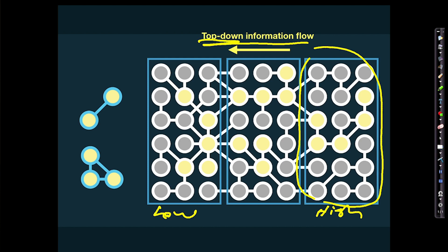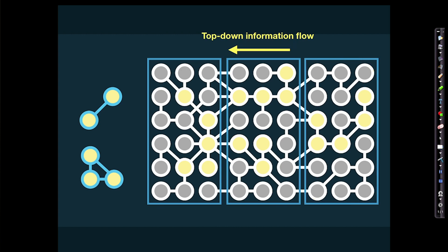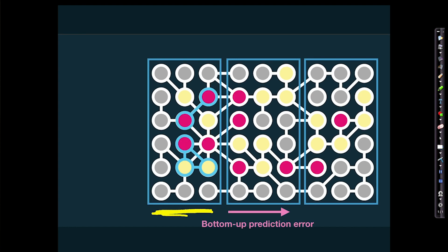We saw in our earlier example that if the prediction is correct, nothing needs to happen. But let's see if this prediction is going to be correct. The low order is making very specific predictions about sensory information — and no, it's not correct. There is a mismatch. The prediction specifies a particular pattern of cortical column activation, but in reality the pink cortical columns are activated. There's an error — a prediction error.